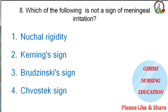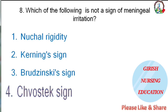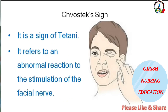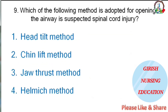Which of the following is not a sign of meningeal irritation — nuchal rigidity, Kernig's sign, Brudzinski's sign, or Chvostek's sign? The correct answer is Chvostek's sign. It is a sign of hypocalcemia; it refers to an abnormal reaction to the stimulation of the facial nerve.